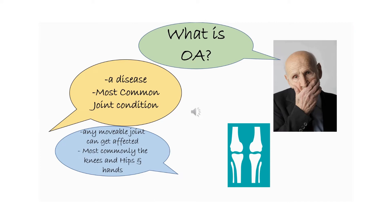What is osteoarthritis? Osteoarthritis, more popularly known as OA, is the most common joint condition. It is a disease. It can affect any movable joint. Most commonly, weight-bearing joints like knees and hips are more affected, and sometimes even hands. So the joints that do the tougher job of moving or bearing the body weight are more commonly affected by OA.